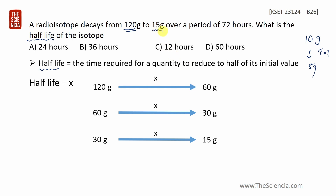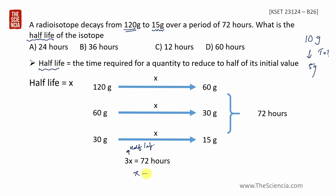After the next half-life: 30 grams → 15 grams. So the process goes through 3 half-lives in 72 years. Therefore 3x = 72, and x = 72 ÷ 3 = 24 years. The half-life is 24 years.